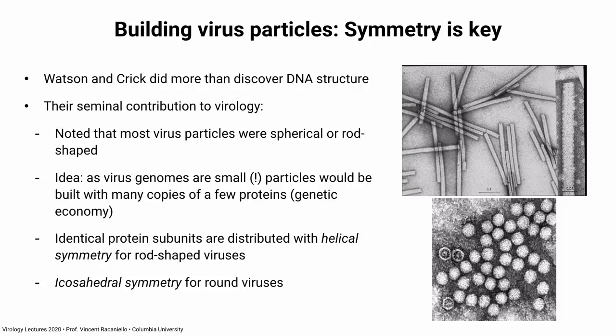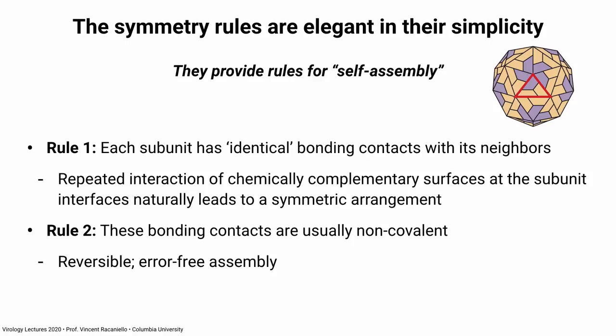That was their contribution. They developed a theory where they said for rod-like viruses, a few proteins repeated over and over again are distributed with helical symmetry. And for the round viruses, they are distributed with icosahedral symmetry. Watson and Crick made a big contribution to our understanding of structure, which was subsequently refined by other individuals. There are rules of symmetry we can use to understand these virus particles. Rule one: every subunit has identical bonding contacts with its neighbors. Basically, you have the same protein or just a few repeated over and over again, interacting in similar ways — that gives you a symmetric arrangement and a lot of stability.